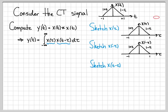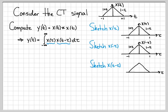Since x of tau is an even function, x of tau looks just like x of minus tau. Now I can sketch x of t minus tau — it has the shape of x of minus tau but shifted to time t. The peak of the triangle ends up at t. So x of t minus tau is now located at time t.